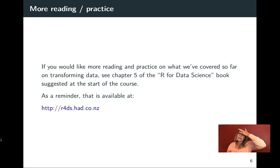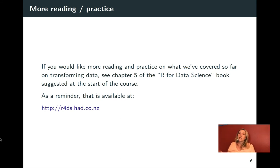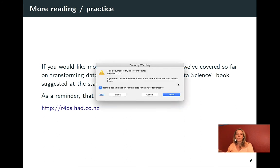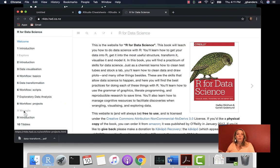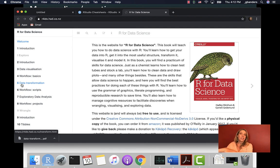Finally, if you want more resources or just different explanations for how all of these pieces work together, I suggest the R for Data Science book. There's a print version available, but you can also find it as a freely available online book. A lot of what we've covered so far has been in the data transformation section, particularly for this week's videos. I definitely recommend it as an additional resource if you'd like to find out more or go over all the ideas we've covered one more time.